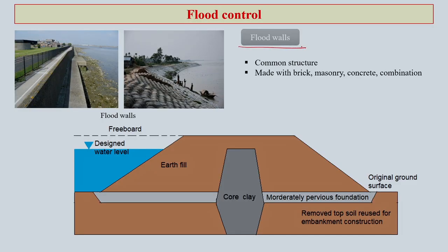One is flood walls, which is one of the most common structures that we see around us. Normally made with brick, masonry, concrete, or a combination of all those things. Even sandbags are also sometimes used. Basically, you have a water level up to a certain range, and then you try to have earth filling first.